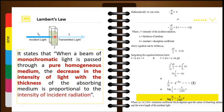Light has been transmitted through this material and the intensity got decreased, and Lambert's law deals with the study of this. The statement of Lambert's law: when a beam of monochromatic light — not polychromatic, you cannot pass white light through a material — is passed through a homogeneous pure medium, there occurs a decrease in the intensity. The decrease in the intensity of light with the thickness of the absorbing medium is proportional to the intensity of incident radiation.